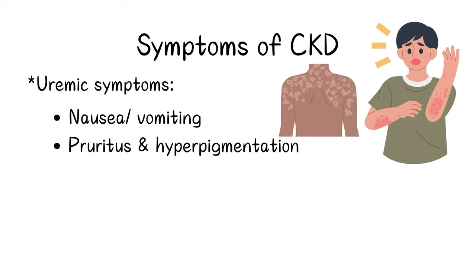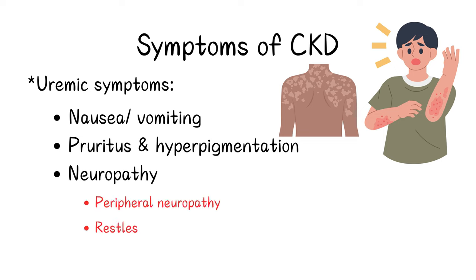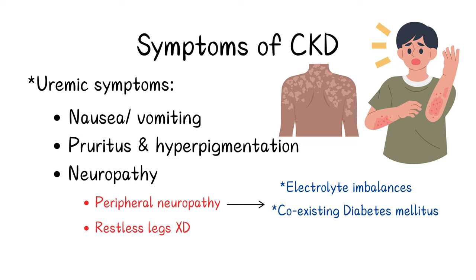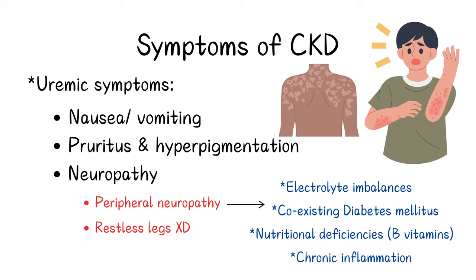Uremic toxins are toxic to nerve tissues and can cause neuropathies such as peripheral neuropathy and restless leg syndrome. Neuropathy in CKD patients can also happen due to other conditions such as electrolyte imbalances, coexisting diabetes mellitus, nutritional deficiencies such as B vitamins, and the chronic inflammatory state associated with the disease itself.